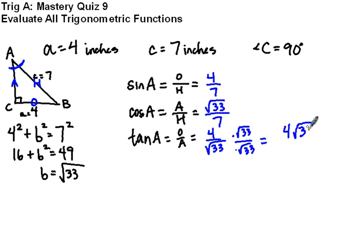4 times the square root of 33 is just 4 root 33. The square root of 33 times the square root of 33 is 33, and this is how I want the final answer.